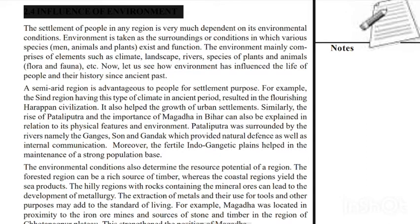We can look at the climate, landscape, rivers, species of plants, animals and other parts of the country. A semi-arid region is advantageous to people for settlement purposes. For example, the Sindh region, which is a semi-arid region, resulted in the flourishing of the Harappan civilization. It also helped the growth of urban settlements.